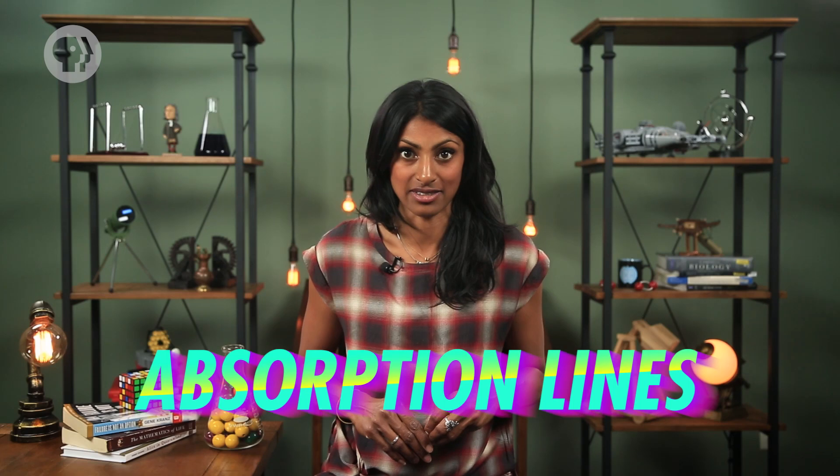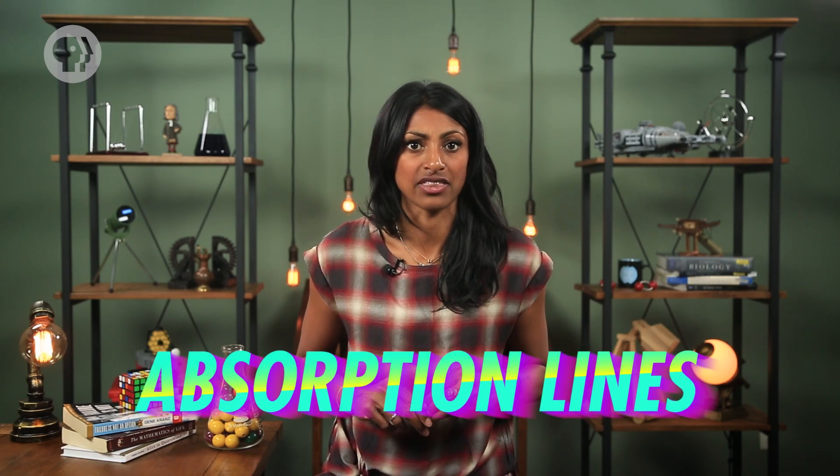And in that case, you can still get information about the light source, because the continuous spectrum from a heated object also contains absorption lines – characteristic wavelengths of light that have been absorbed by the same elements that emitted them.